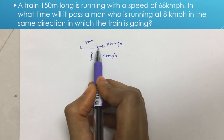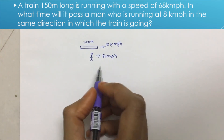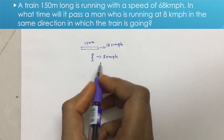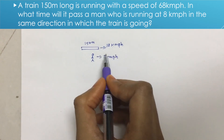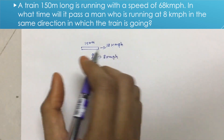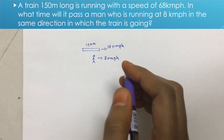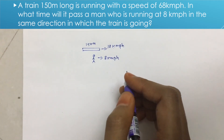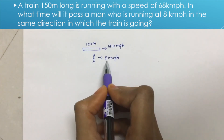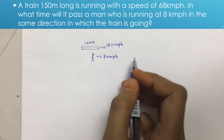The man is running at 8 kmph. This is a relative velocity concept. When two objects move in the same direction, we use relative velocity, which is the difference of their speeds. So the relative speed is 68 minus 8 kmph.